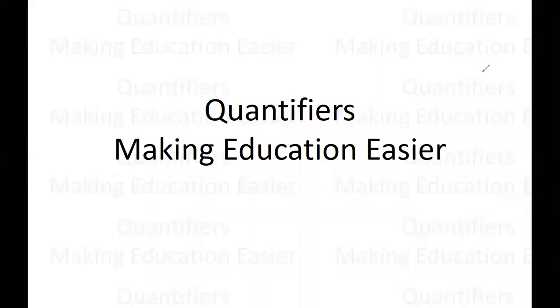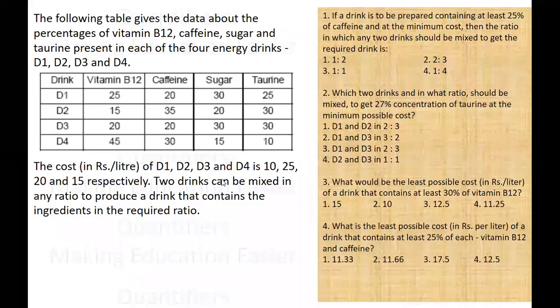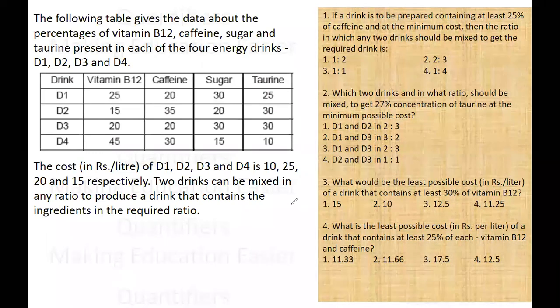Hello everyone. This is our set of the day. You are given a table in which four drinks are available and the data is about different components, different ingredients in these four drinks: Vitamin B12, Caffeine, Sugar, Taurine, etc., and their percentage values are given here.